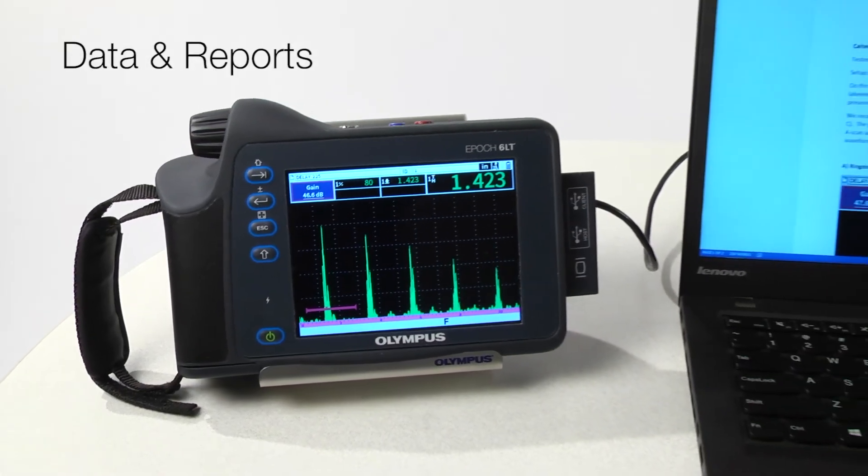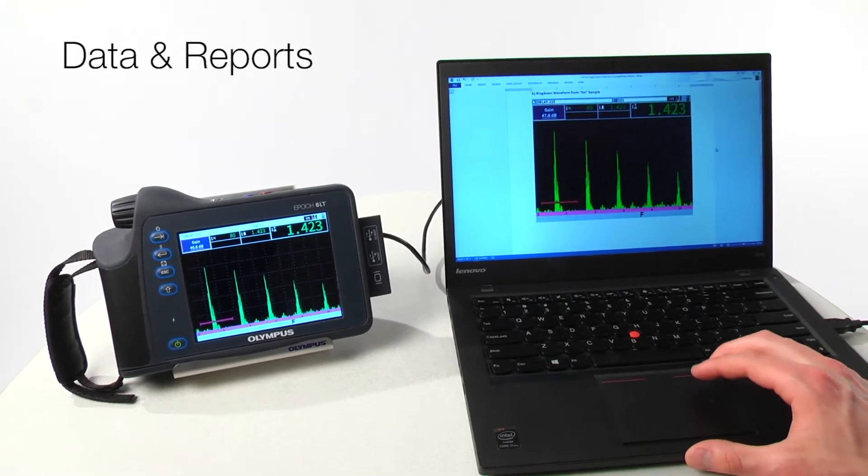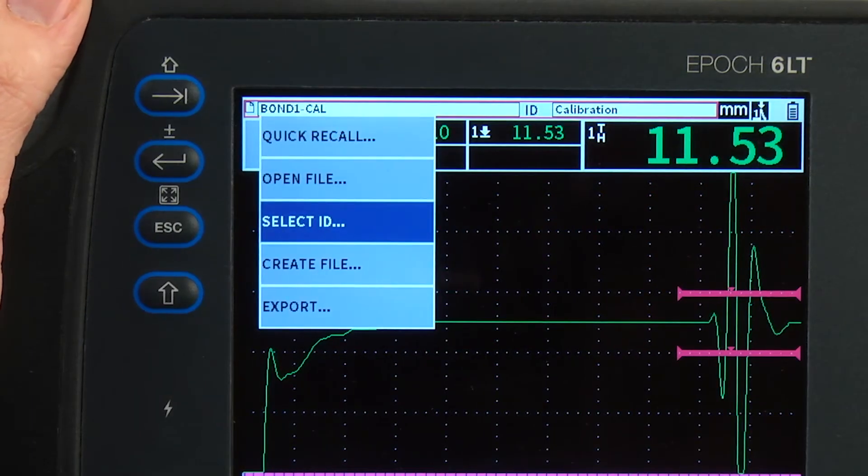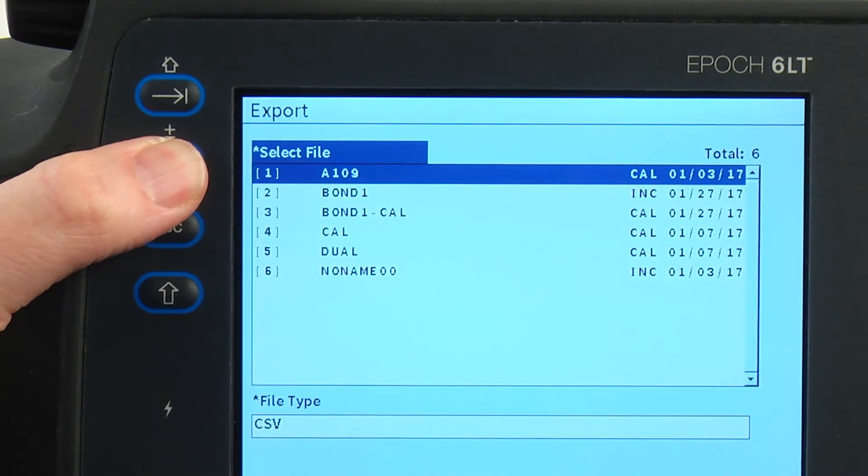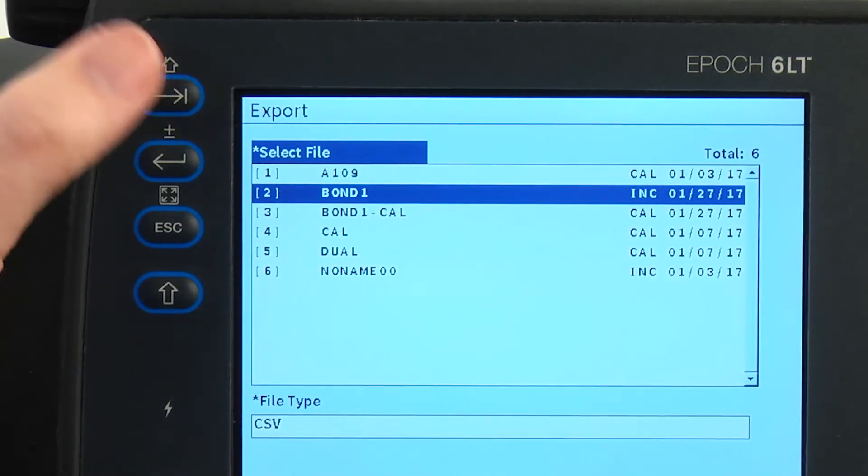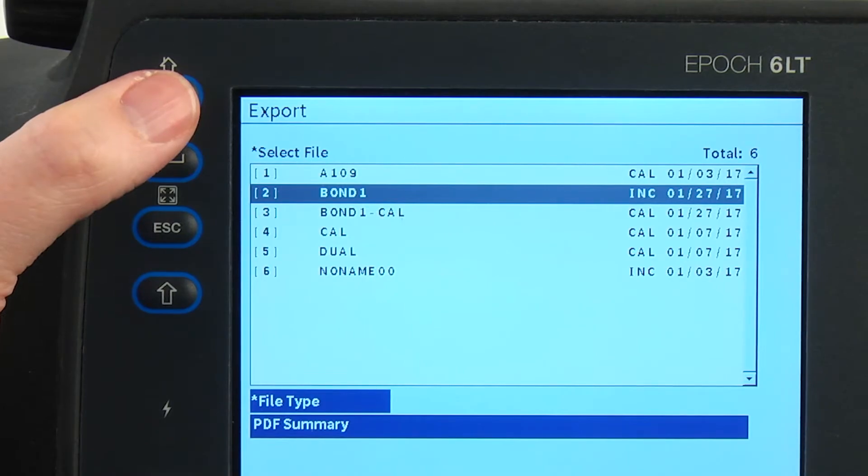Once the inspection is complete, the EPOCH 6LT Flaw Detector makes it easy to communicate the results of your work. The simplified file management system enables rapid storage of inspection data. You can export your saved data in common file formats for integration into your custom reports, or to quickly communicate inspection results in a predefined report format.